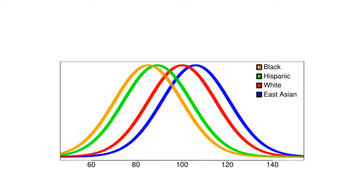This is the biggest controversy of IQ — it has something to do with races. On average, if you test people in the USA, black people will have an average 15 points lower IQ than white people. East Asians will have even higher IQ than white people. Hispanics will be between black and white people. If this is true, East Asians would need to have a higher wage than white people, because IQ correlates with wages — and this is also true.